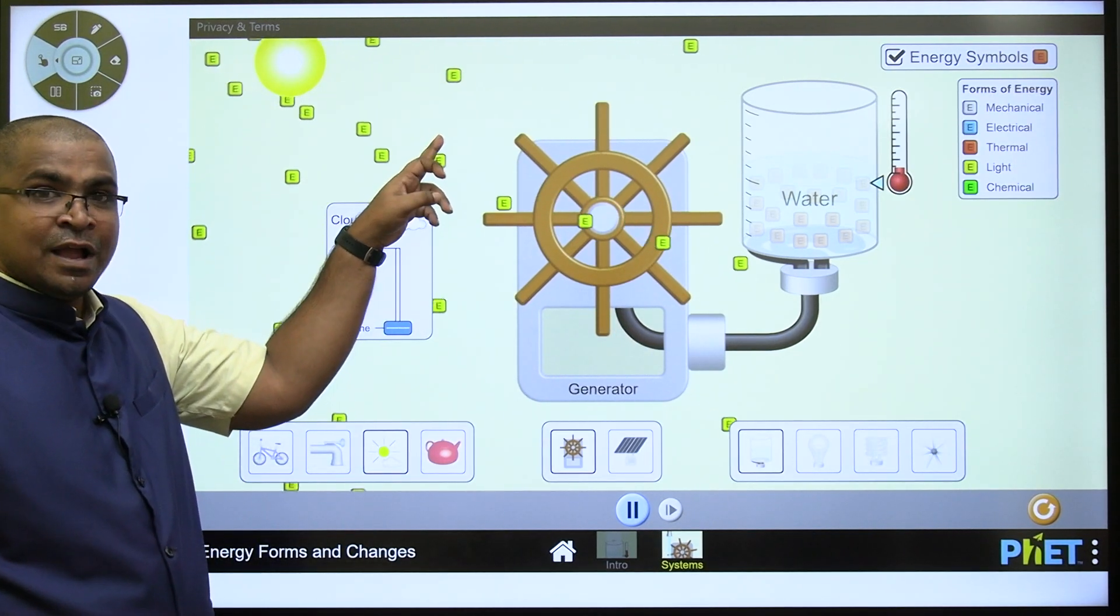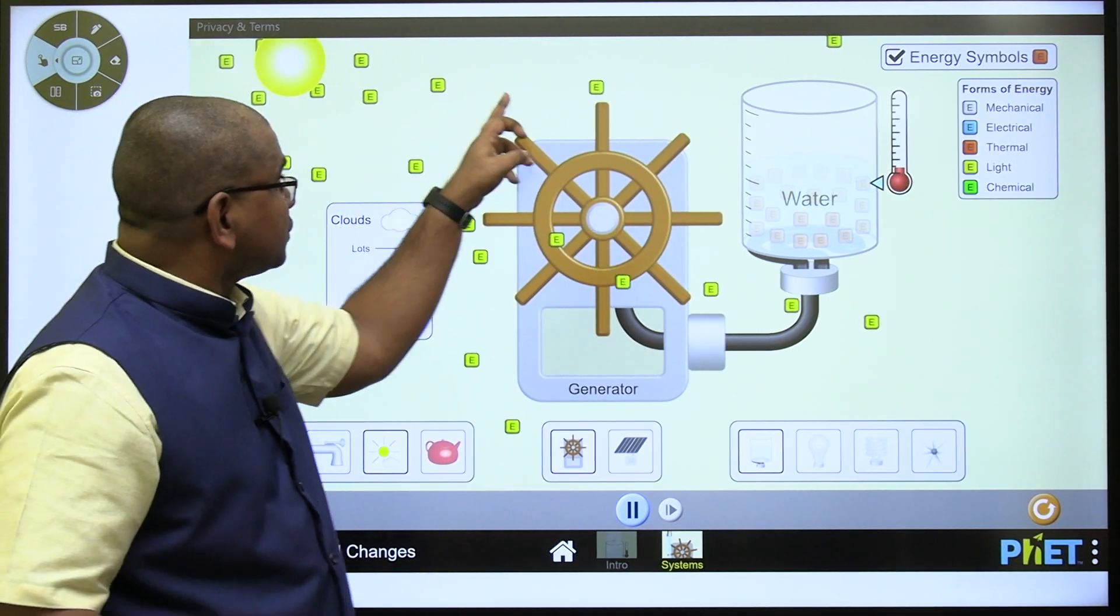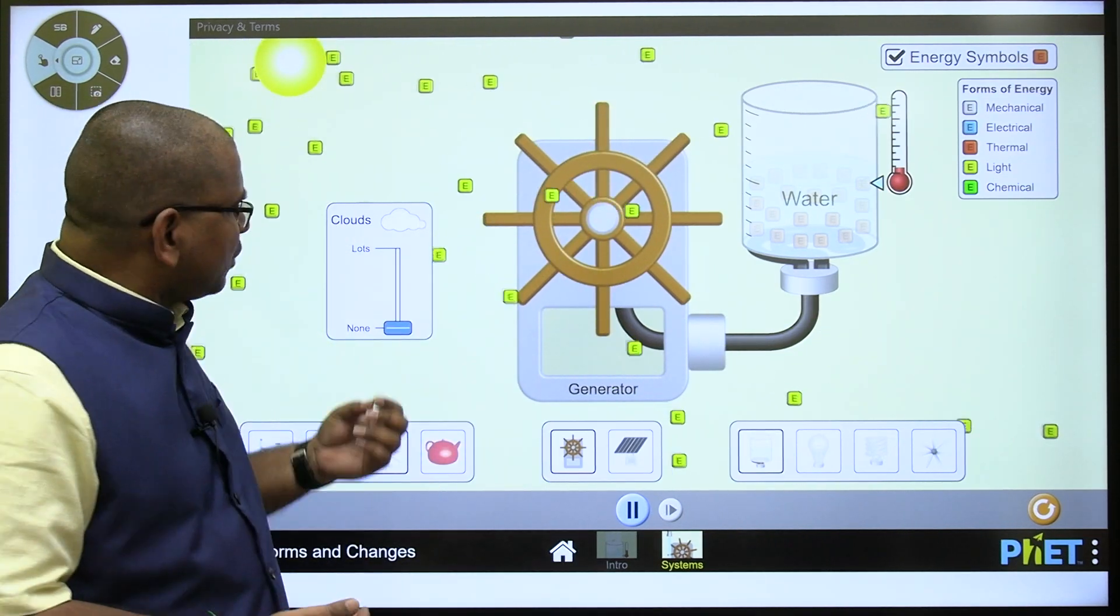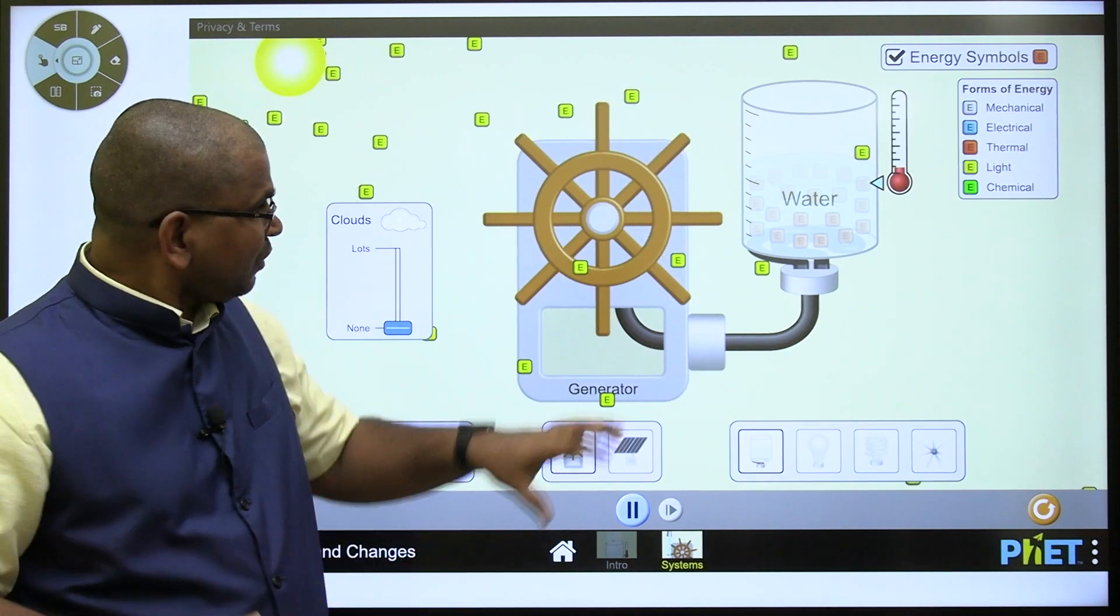Sun is giving you, at Earth's surface level, most of the energy is light energy. Some amount of heat is also coming, but we are not considering that one for this conversion.